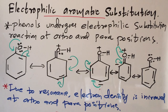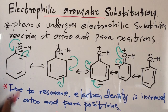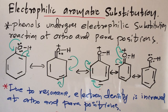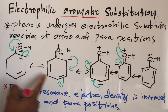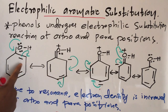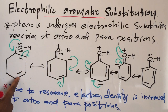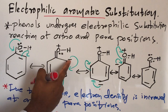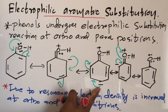The next important reaction of phenol is electrophilic aromatic substitution reaction. Phenols undergo electrophilic substitution reaction at ortho and para positions. Looking at the resonating structures, it is very clear that at ortho and para positions, electron density is maximum.